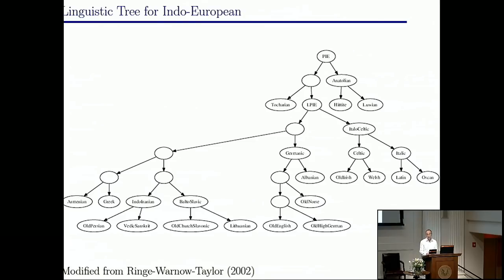This is a tree reconstruction of the relationship of Indo-European languages by Don Ringe, Tandy Warnow, and others. It is different in some of its features from some of the trees that Andrew was showing, and I'm not making any claim that this tree or another is right. The relationship amongst Indo-European languages was articulated in a very strong form at the end of the 18th century by William Jones in India, who noticed the connections between Sanskrit and European languages — clear evidence of a strong cultural connection amongst these very geographically disparate places. And so the great question has always been: how did this occur?